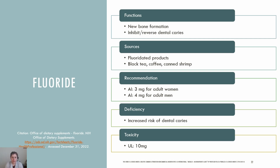Fluoride is a mineral that plays a role in stimulating new bone formation and also inhibiting or reversing the start of dental caries or tooth decay. Most fluoride consumed comes from fluoridated water, toothpaste, and other dental products containing fluoride. Black tea, coffee, and canned shrimp are also sources. The AI for fluoride is 3 milligrams for adult women and 4 milligrams for adult men. Although there isn't a specific deficiency condition, inadequate fluoride can pose a risk for dental caries since fluoride inhibits demineralization and the activity of bacteria in dental plaque. The UL for fluoride is 10 milligrams for adults. High doses can result in nausea, vomiting, diarrhea, and death in rare cases. Long-term ingestion of excess fluoride in infancy and childhood can also lead to dental fluorosis, which can cause white lines or brown stains on the teeth.